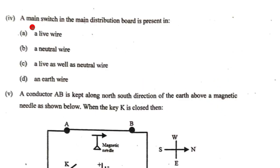The fourth subpart: the main switch in the main distribution board is present in. Now remember the main switch is going to be a double pole switch. It connects and disconnects both live and neutral wires. So the option is C.